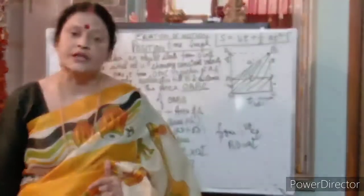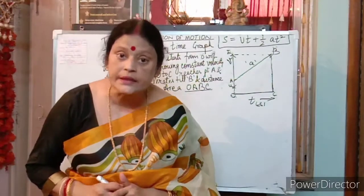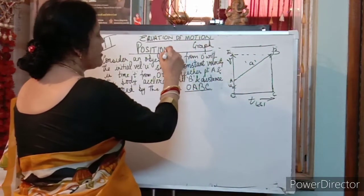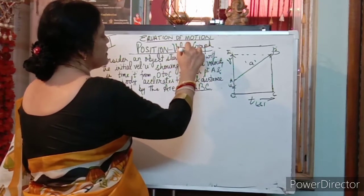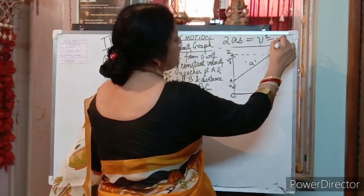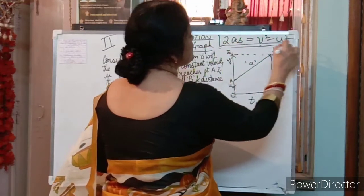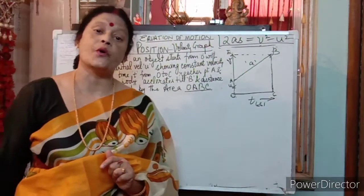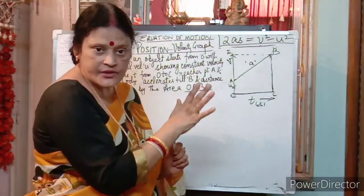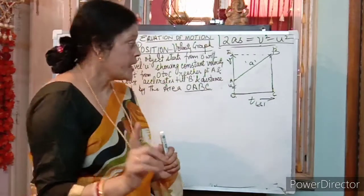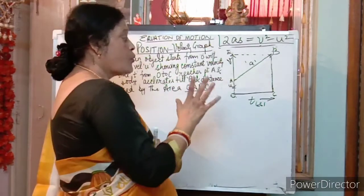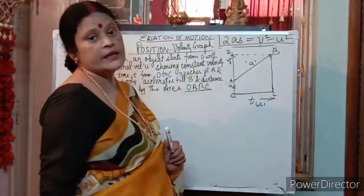Now come to third equation. Now we are going to start with the third equation. Now what is your third equation? That is position, velocity graph. That is what 2AS is equal to V squared minus U squared. This is third equation. We have to prove or derive what is the third equation. Simple, same graph is same, everything is same, consider a body and all.